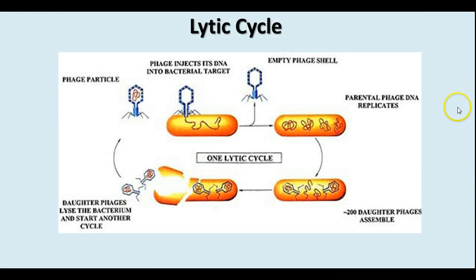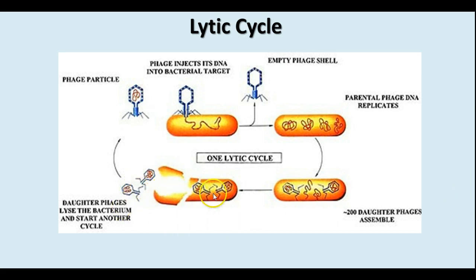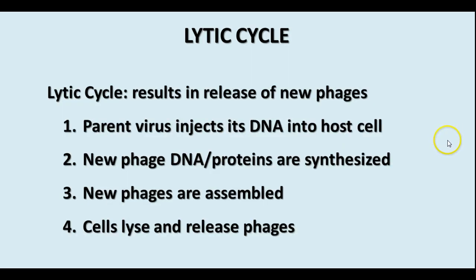Here is a little more detail about the lytic cycle. The phage attaches to the bacterium and injects its DNA. The DNA starts replicating itself and taking over the bacterial machinery to make viral particles, which are then assembled. Once you have thousands and thousands of them, it's going to break the bacterium open and start another cycle, causing rupture of the cell and cell death. Steps: the parent virus injects its DNA, new phage DNA and proteins are synthesized, new phages are assembled, then the cell lyses and releases the phages to infect other cells.